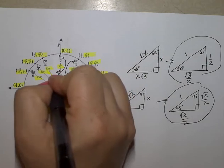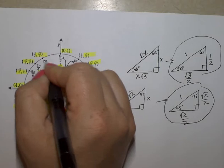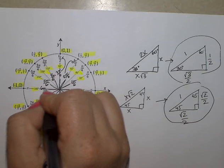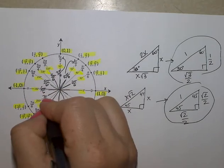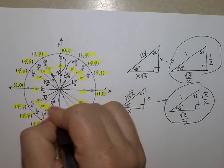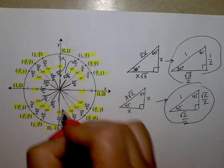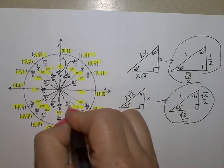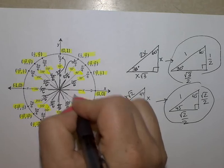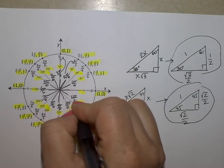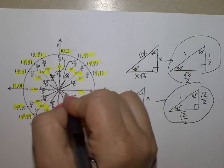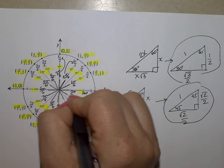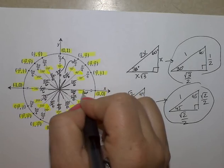Then I have 4 pi over 6, which reduces to 2 thirds pi. 5 pi over 6 does not reduce. 6 pi over 6 reduces to 1 pi. 7 pi over 6 cannot be reduced. 8 pi over 6 reduces to 4 thirds pi. 9 pi over 6 reduces to 3 halves pi. 10 pi over 6 reduces to 5 thirds pi. 11 pi over 6 cannot be reduced. And the last one, which is equivalent to 360 degrees, would be 12 pi over 6, which reduces to 2 pi.